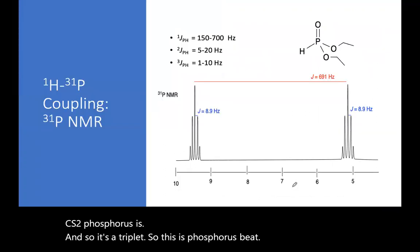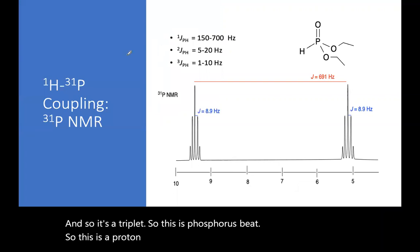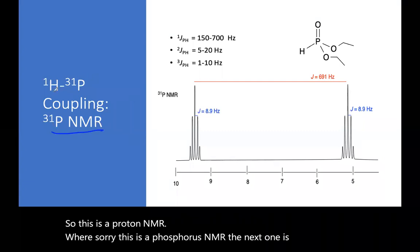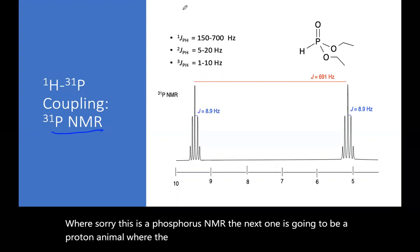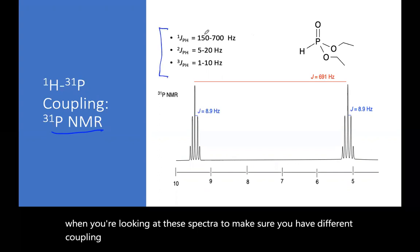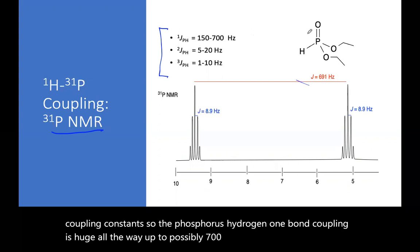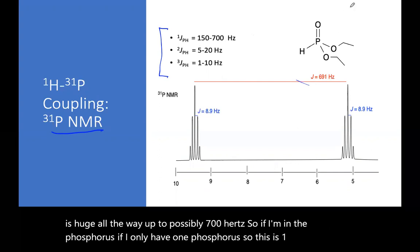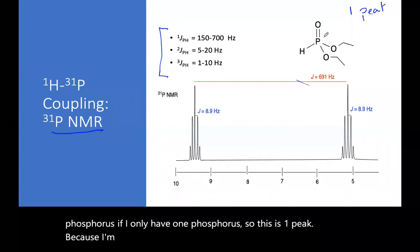So this is a proton NMR where - oh sorry, this is a phosphorus NMR, the next one's going to be a proton NMR - where we haven't decoupled it. So it's important when you're looking at these spectra to make sure you have different coupling constants. So the phosphorus-hydrogen one bond coupling is huge, all the way up to possibly 700 hertz. So if I'm in the phosphorus, if I only have one phosphorus, so this is one peak because I'm only observing one phosphorus atom.